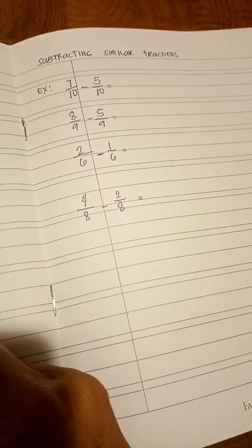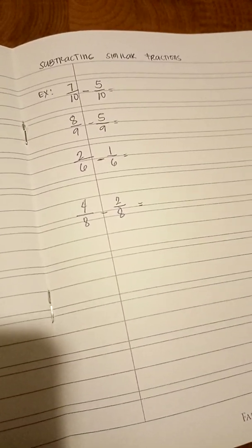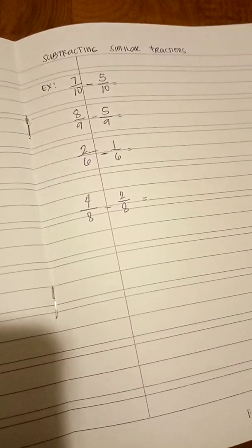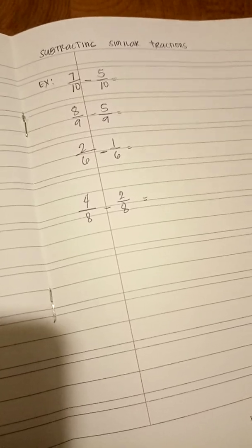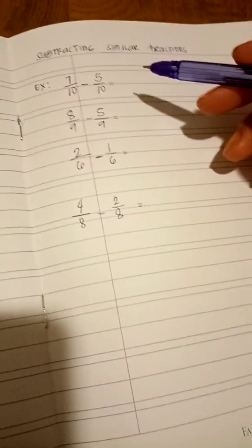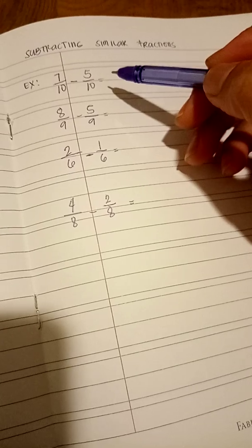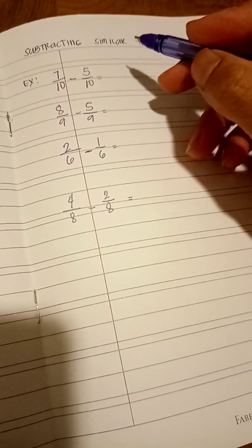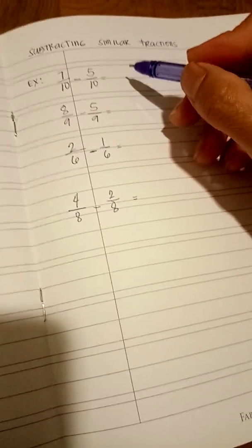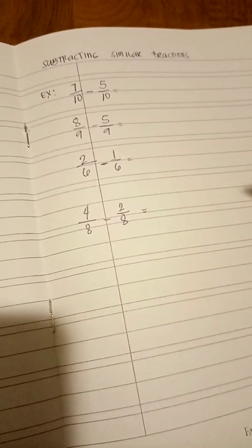There are three steps to subtract fractions. First, make sure that the bottom number or the denominator are the same. Second, subtract the top numbers, which is the numerator. Put the answer over the same denominator. Simplify the fraction if needed.